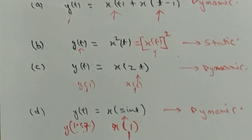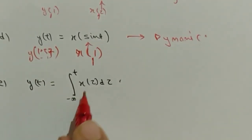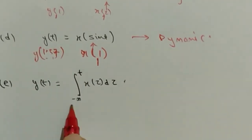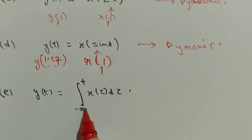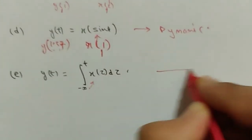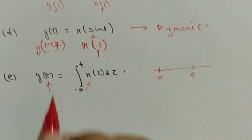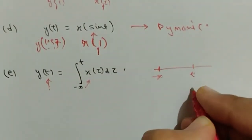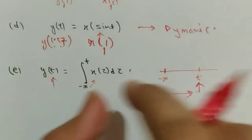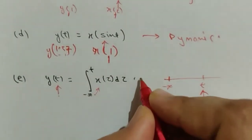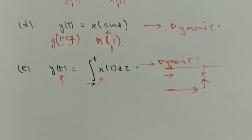Next question: y(t) = ∫x(τ)dτ from -∞ to t. We are integrating from minus infinity up to current time t, so y(t) depends on all past values of x(t). Therefore this is a dynamic system.